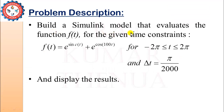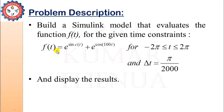You have to build a Simulink model that evaluates the function f for the given time constraints. The function f is equal to e to the power sinc(t) plus e to the power cos(100t). The time constraints are t greater than or equal to minus 2π and less than or equal to 2π, and the step size — the time increment — is π/2000. You have to make these settings in the Simulink model, evaluate the function, and finally display the result.